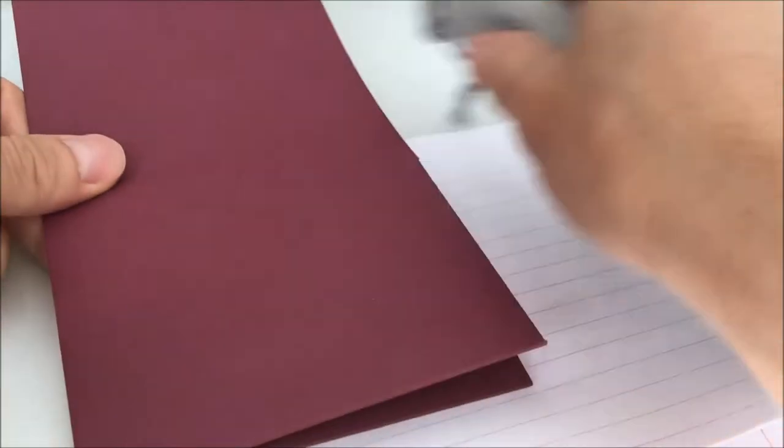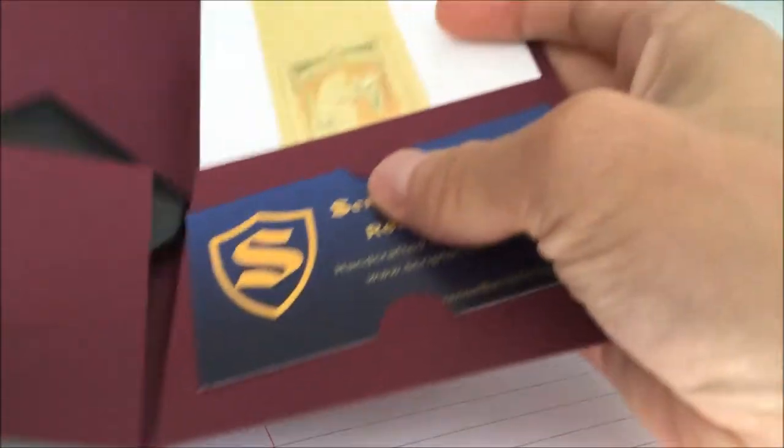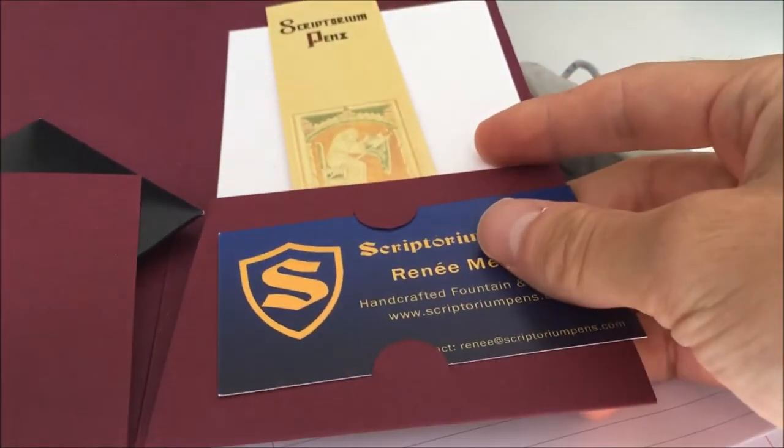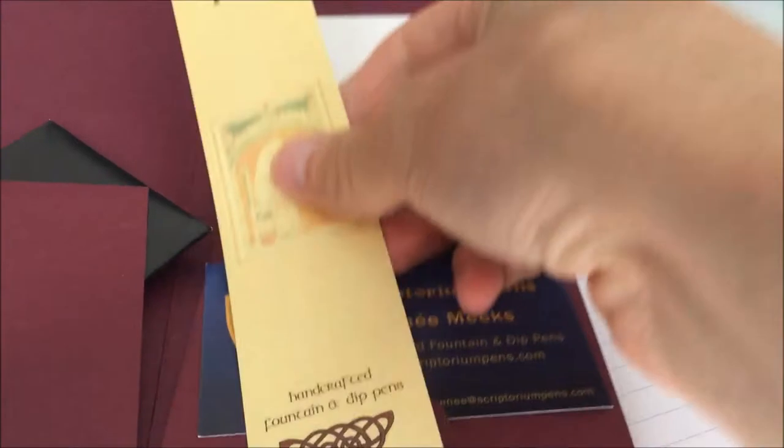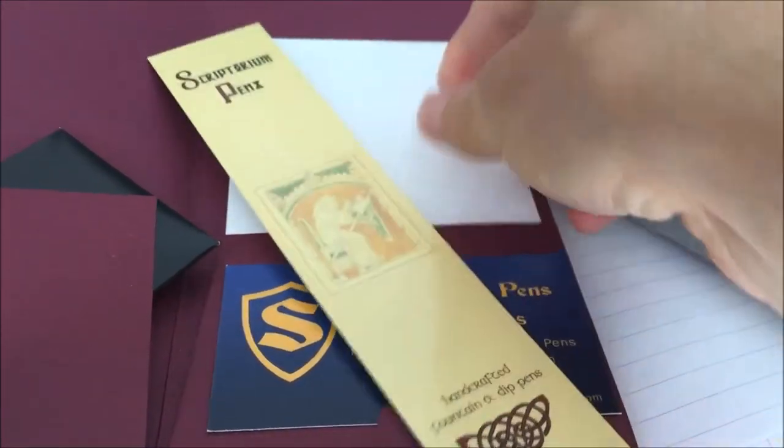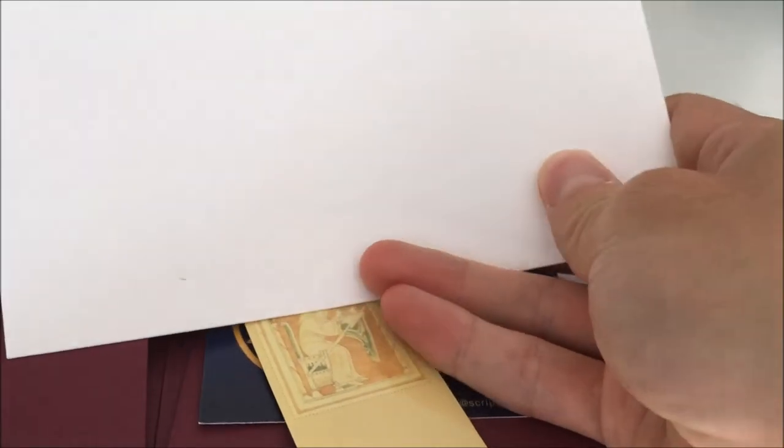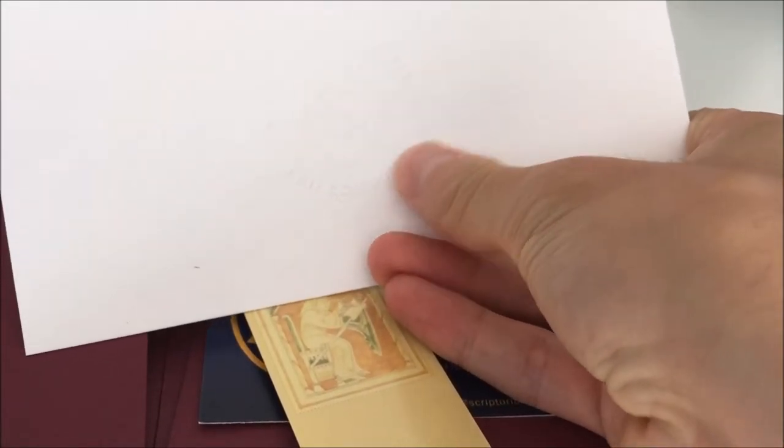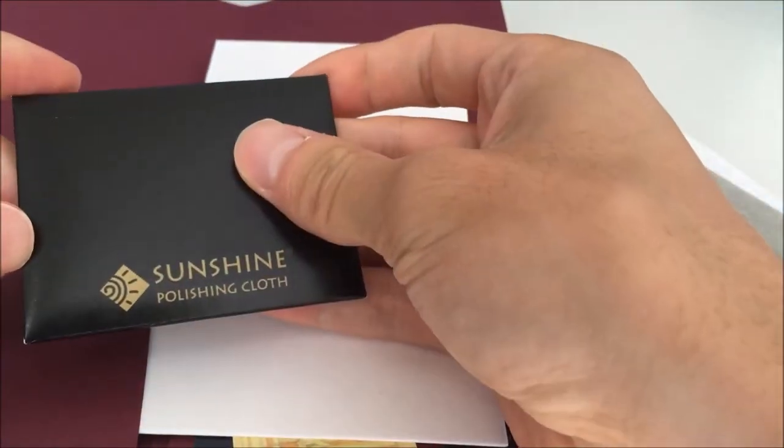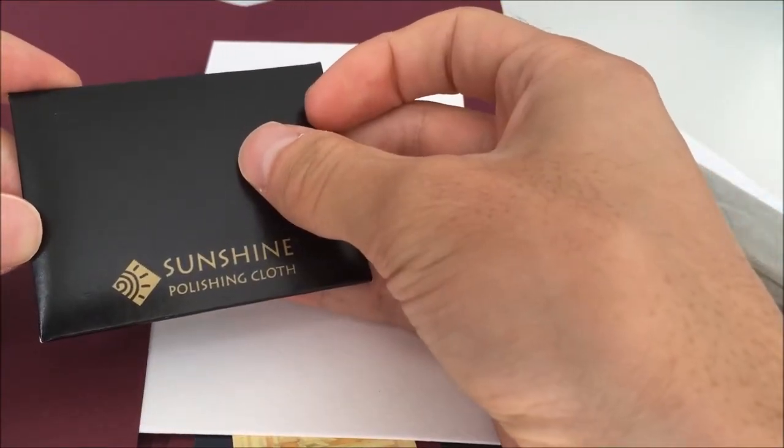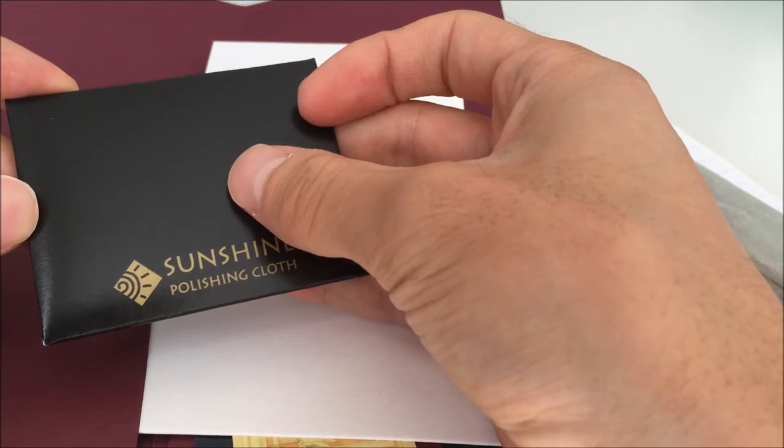When you order a pen from Scriptorium you get an envelope like this with her business card, a bookmark with the Scriptorium Pens logo, a piece of paper with the Scriptorium Pens logo embossed, and a polishing cloth which I believe is just for the metal hardware on your pens.